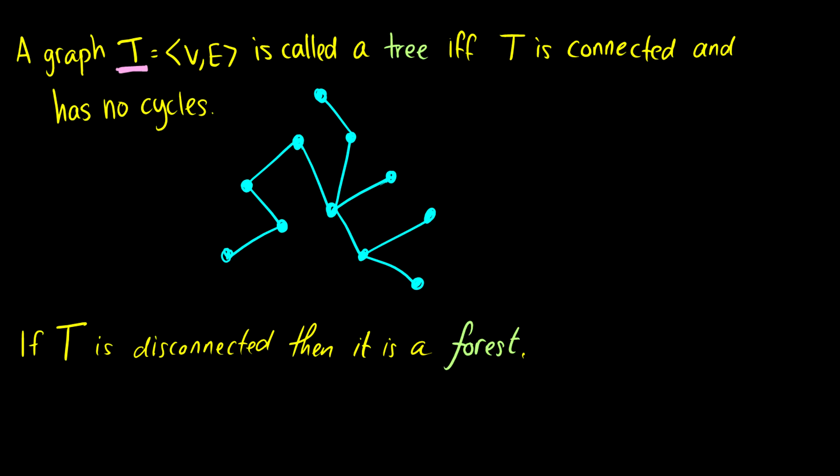If you have a graph that is not completely connected but still abides by not having any cycles, then we call it a forest because essentially this graph here is just two trees and anything more than one tree is a forest. Of course, maybe not in real life, but in the mathematical world, it is a forest.